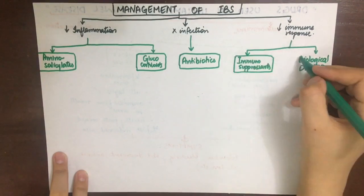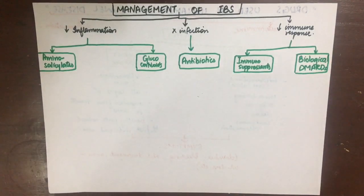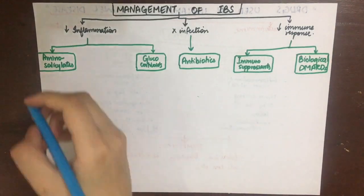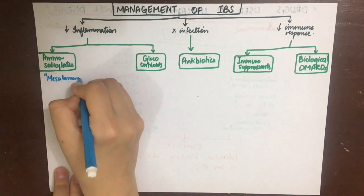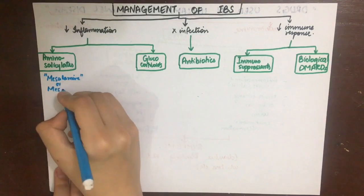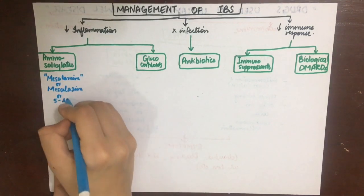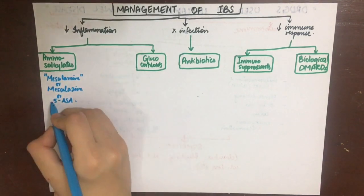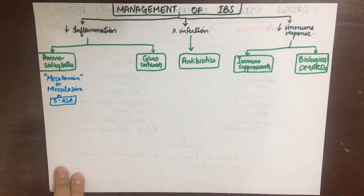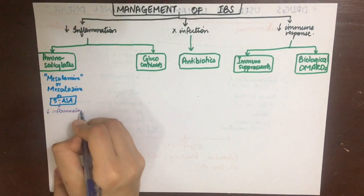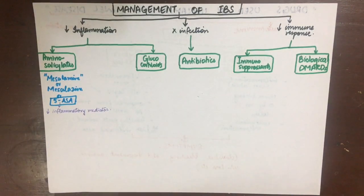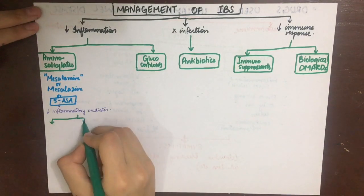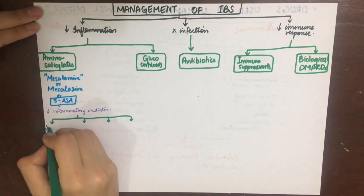In aminosalicylates, the active molecule is mesalamine, also called 5-aminosalicylic acid (5-ASA). Salicylic acid, as you may recall, is related to aspirin (acetylsalicylic acid). Its chief action is to inhibit inflammatory mediator release such as interleukin-1, TNF-alpha, leukotrienes, etc.